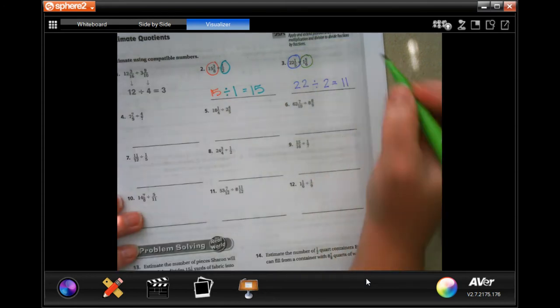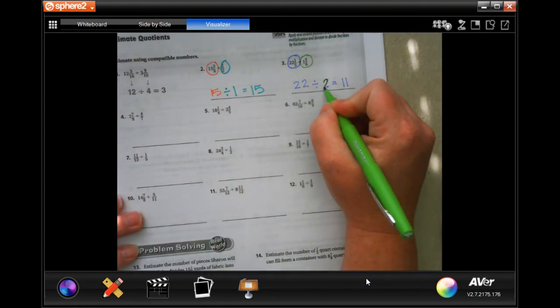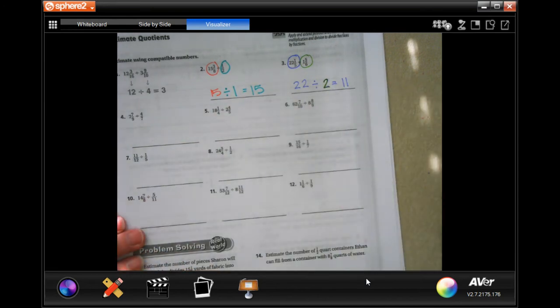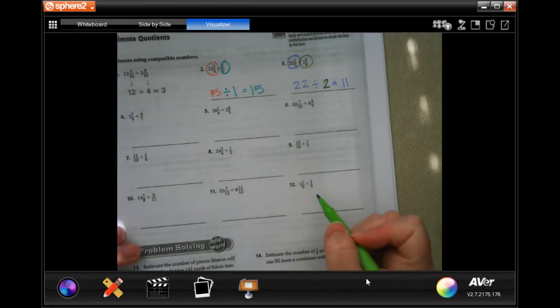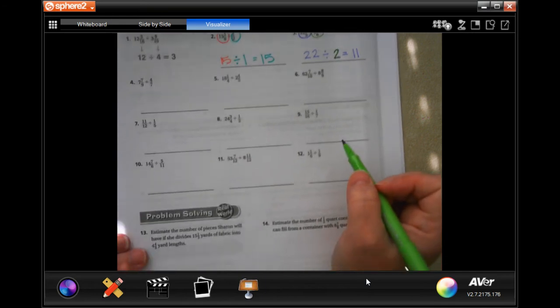I'll do that for you so you can see. All right. So we're going to go down, and you guys are going to go ahead and do 4 through 12. You guys totally can. I believe in you.